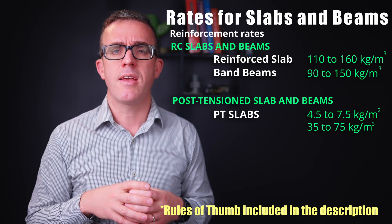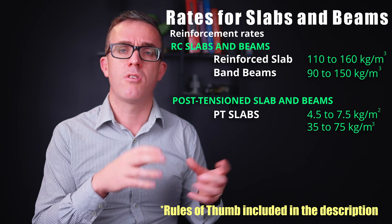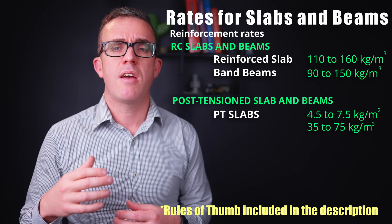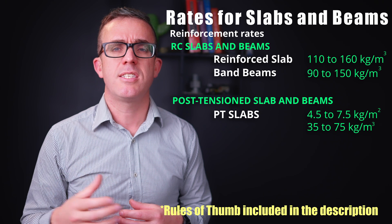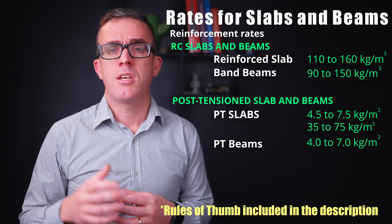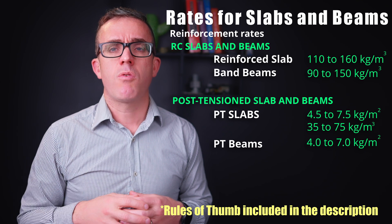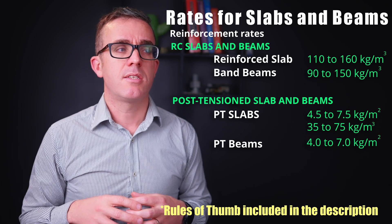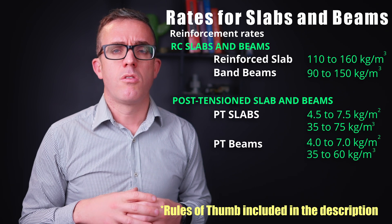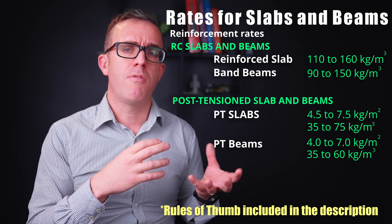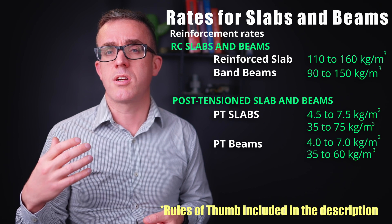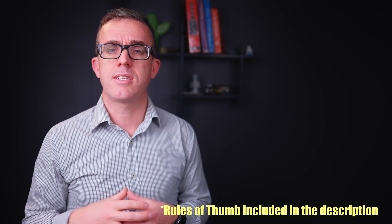For post-tensioned beams, post-tension strand rates are between 4 and 7 kg/m², and reinforcement rates are between 35 and 60 kg/m². The low end of 35 applies to residential slabs, while heavier slabs such as podium floors, roof structures, or plant floors sit at the 60 kg/m² end.